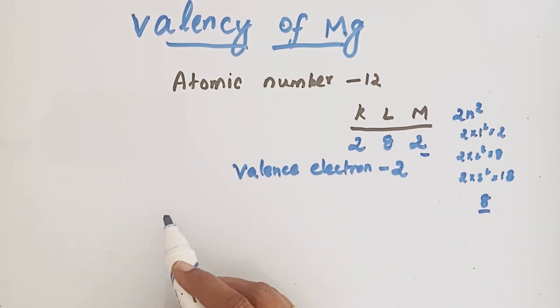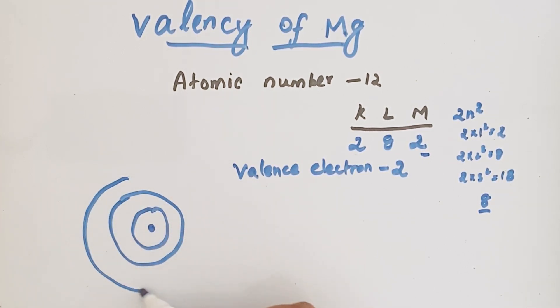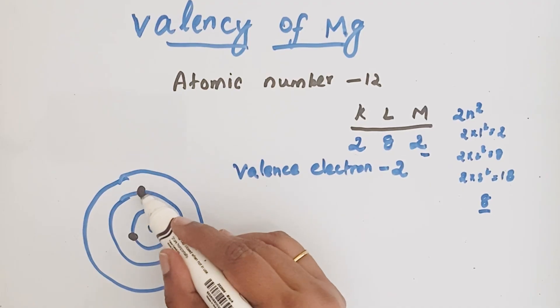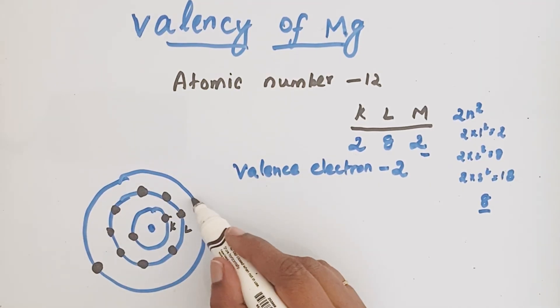So this can be represented in atomic structure schematic form. We have the nucleus, then first shell, then second shell, then third shell. First one KLM. In the first shell we have 2 electrons, in the second shell we have 8 electrons, in the M shell we have 2 electrons.